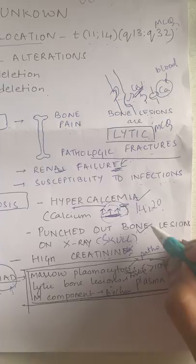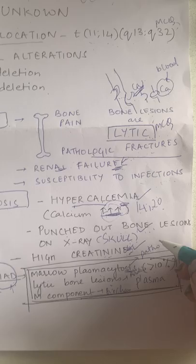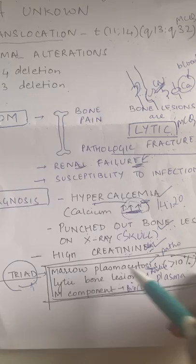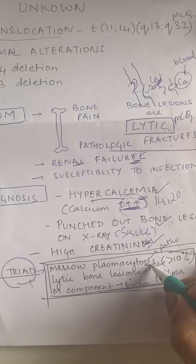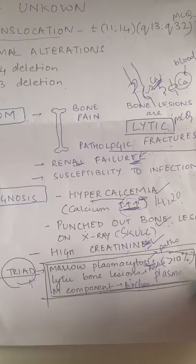For diagnosis: the patient has hypercalcemia, punched-out bone lesions especially on the skull — which can be a part of your MCQ — and high creatinine. But the classic triad is marrow plasmacytosis with more than 10% plasma cells, lytic bone lesions on radiology, and the M component seen through biochemistry.